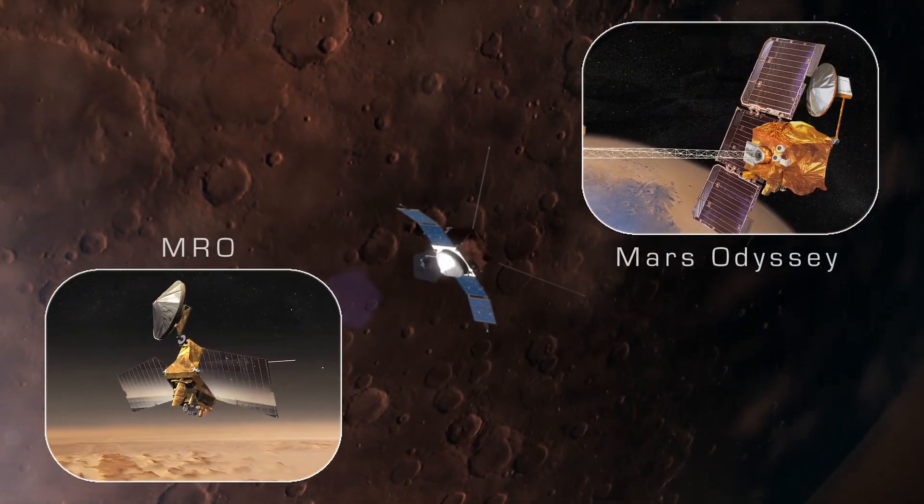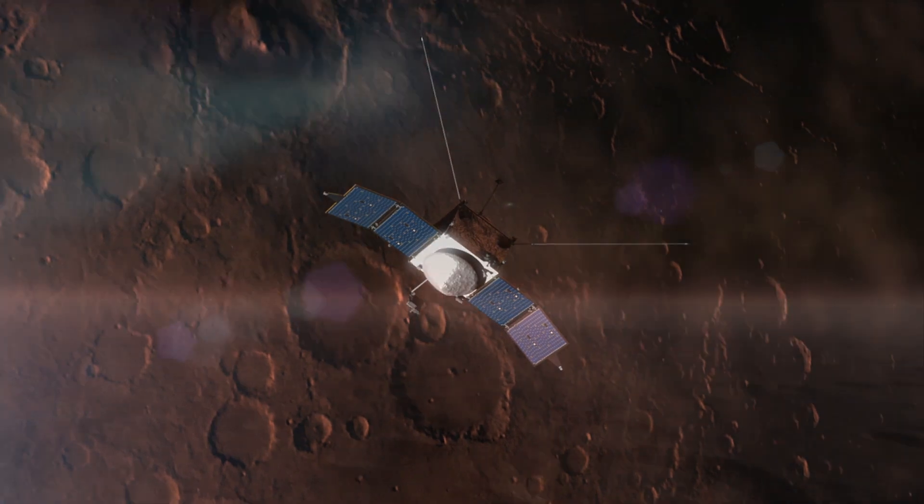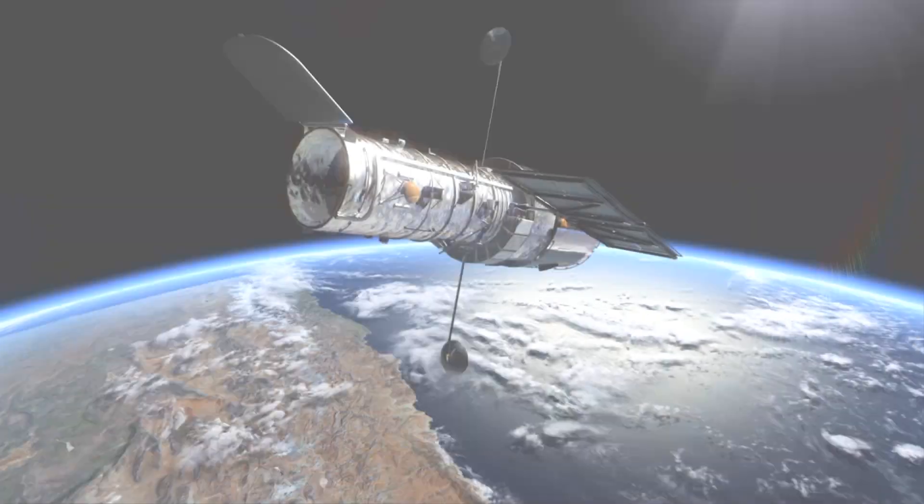MAVEN will join NASA's Mars Reconnaissance Orbiter and Mars Odyssey in observing the comet, looking at its composition and the effects of its coma on the Mars upper atmosphere.